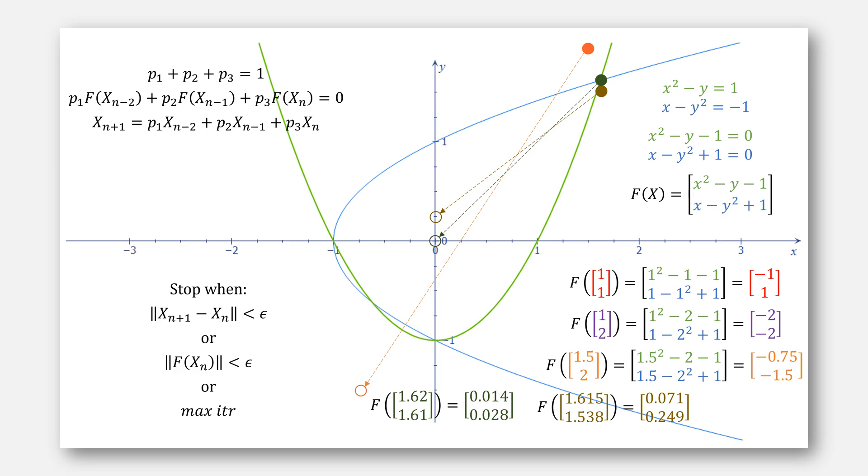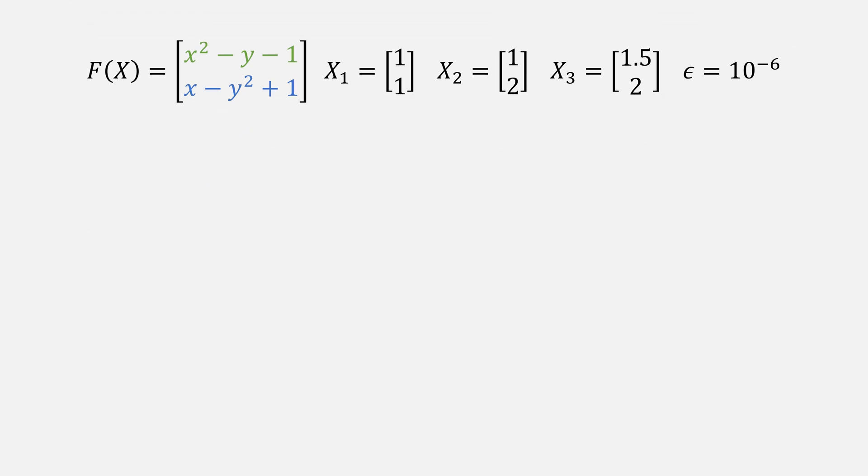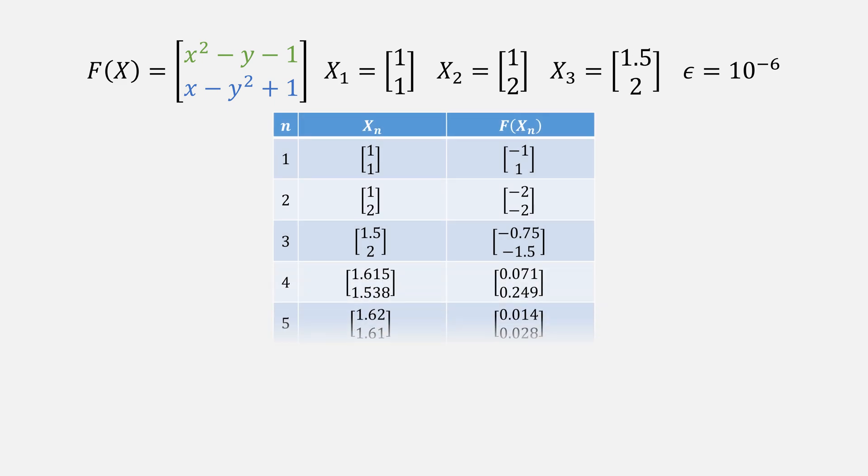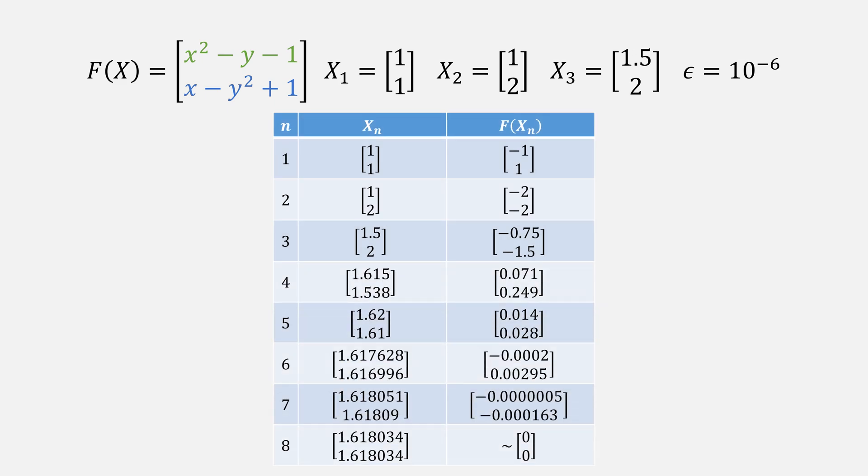Let's look at a numeric example. Here, we use an ending value of 10 to the minus 6 as our epsilon. From these three starting points, it only takes a few more iterations to actually converge on a solution. Notice, we haven't used the Jacobian once.